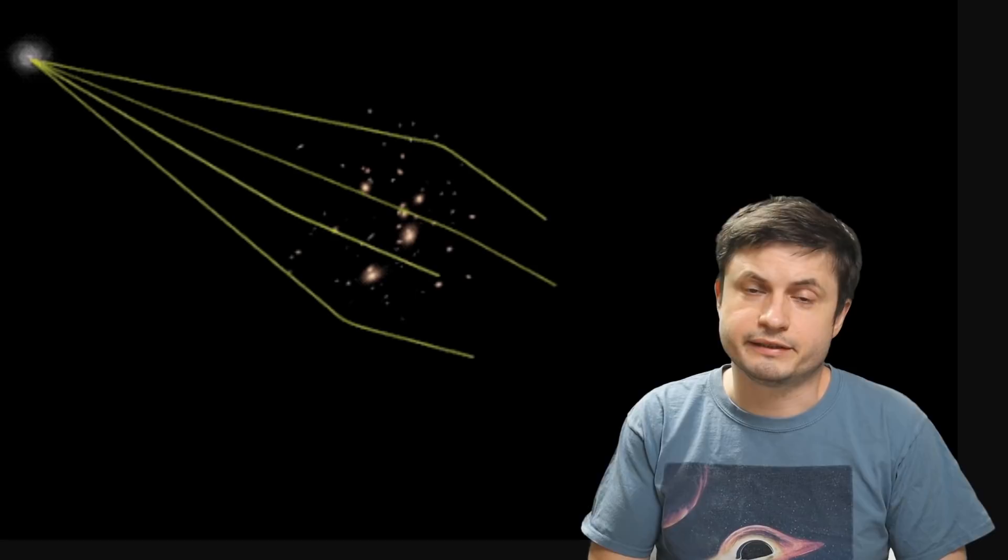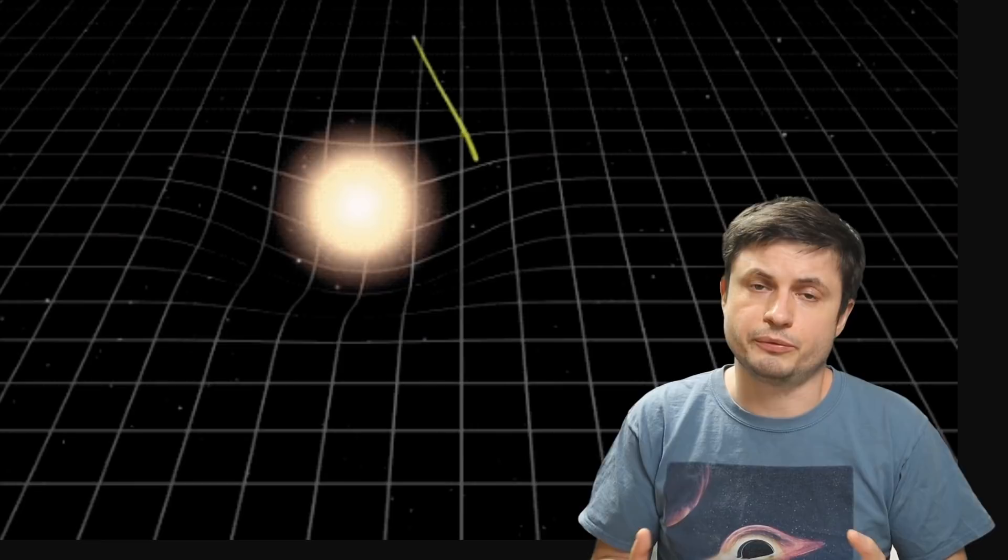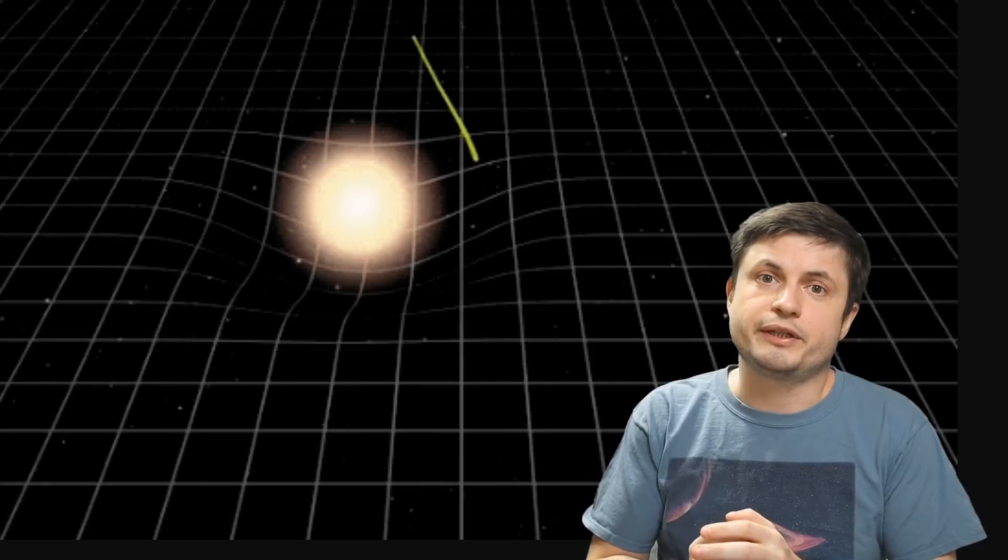We know that black holes warp space around them. You can see it right there on the screen. This is a space warping effect created by an extremely massive and compact object. But we know that anything that has mass and energy produces these ripples, although they're not usually that easily visible. And the more complex the system, the more space folding and different types of manifolds end up forming in the region.